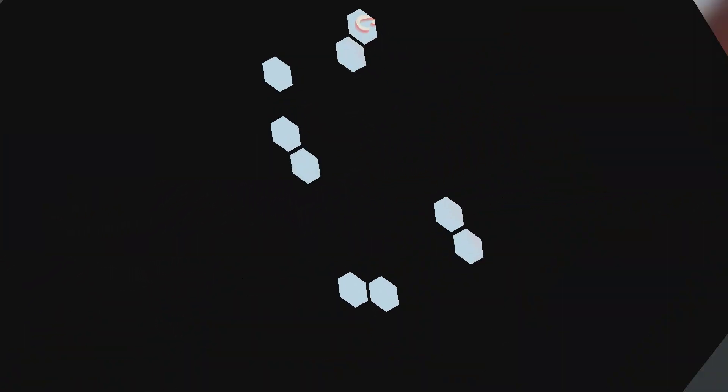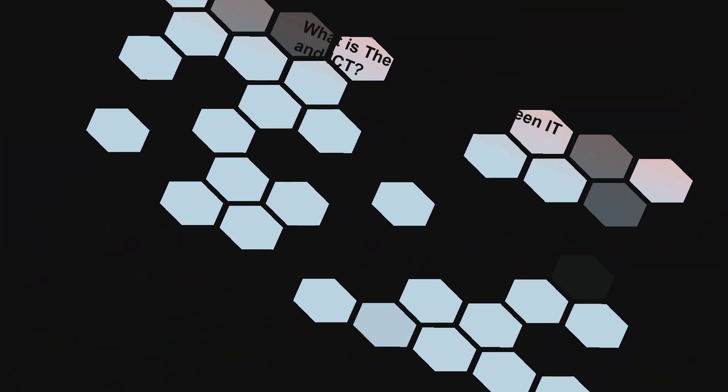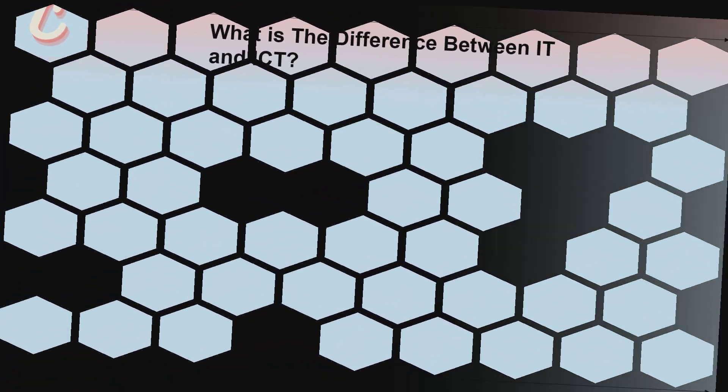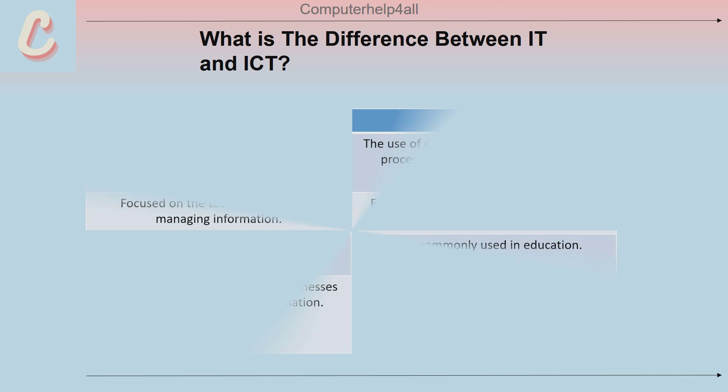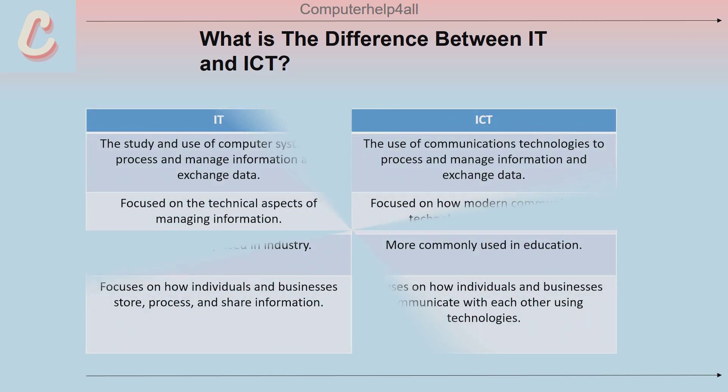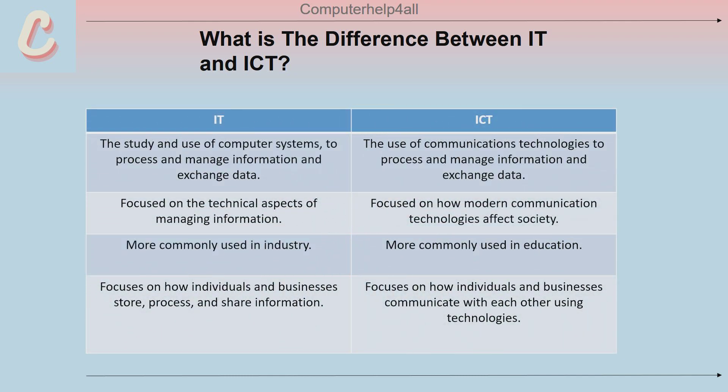IT is more commonly used in industry and the field related to computers, hardware, and software. IT is an industry that uses computers, networks, and software and other digital or electronic devices to manage and communicate information.